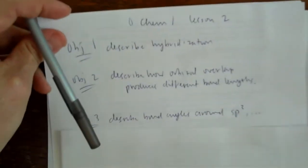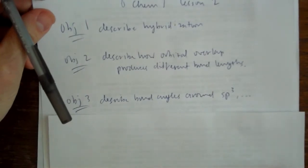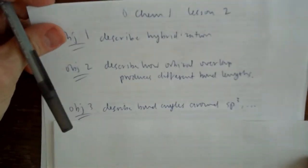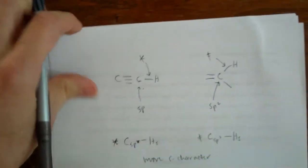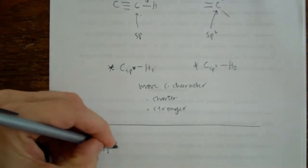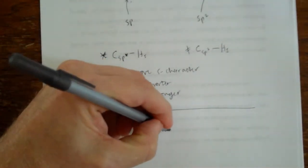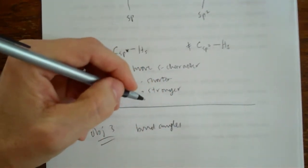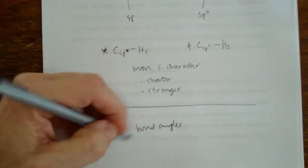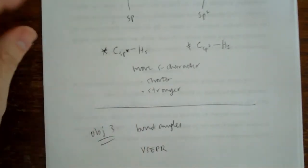Objective number three, describe bond angles around sp3 hybridized atoms, sp2, and sp. And I'm just going to take you back to VSEPR.